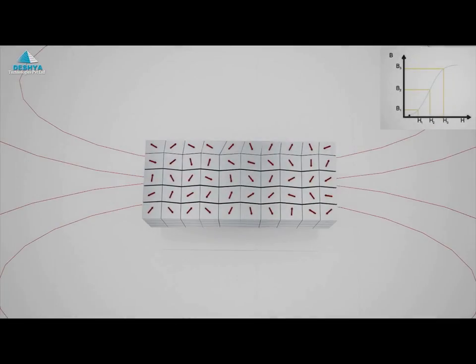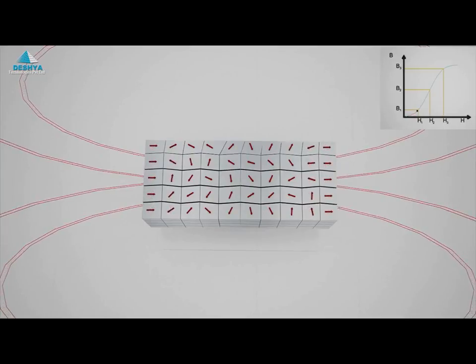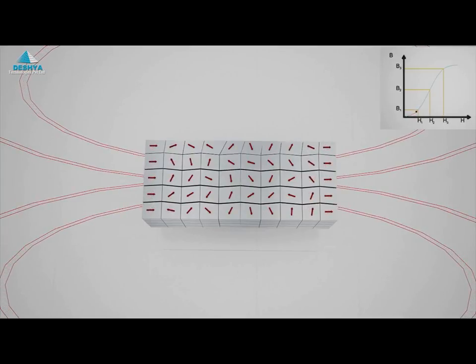When we apply a small magnetic field to this slab, what happens is that the domains begin to move, and the domains which have a favorable direction of easy magnetization grow larger. This growth is reversible as long as the field stays very small. If we turn the field off, the magnetization will return to zero.